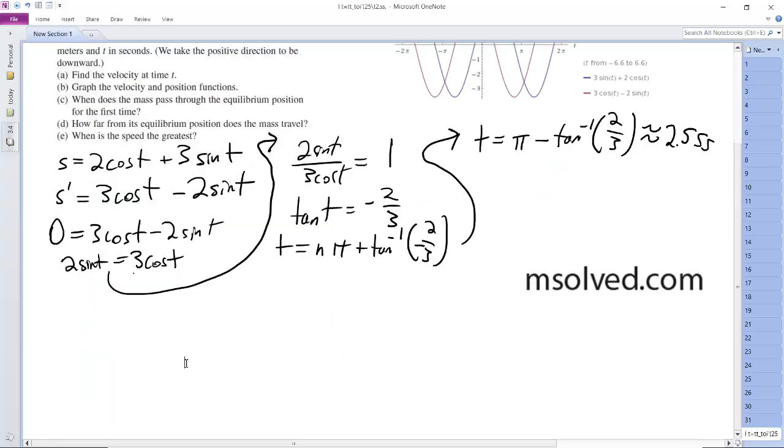So we want to find the extreme position. So extreme position is where it's going to change direction, and at that point the speed is going to be 0. So we set the derivative equal to 0: 3 cosine t minus 2 sine t is equal to 0.